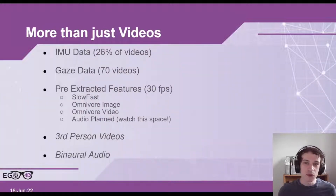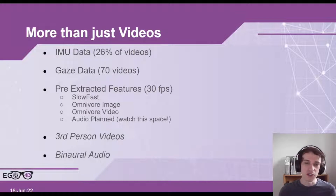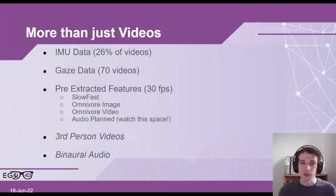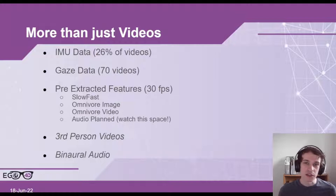Ego4D is more than just videos. For around a quarter of our videos we have IMU data, which includes accelerometer and gyroscope values. For a small subset of videos we have gaze data, which allows you to see where the user was looking whilst they were recording. We also have pre-extracted features for those who wish to train with the dataset but don't have the computing resources to train end-to-end on the whole thing.